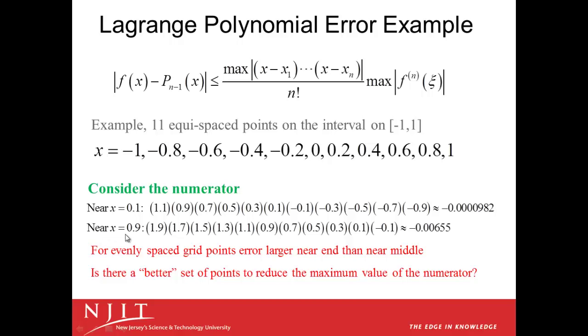If instead we consider an x value near the end of the interval, instead of near the middle of the interval, like 0.1 is right near the middle of the interval, if we choose 0.9 instead, we have 0.9 minus negative 1, 0.9 minus negative 0.8, and so forth. And we have the product on the bottom over here, which works out to be 0.00655. And we see that near the end, this is roughly 100 times as big as the numerator of the error term near the middle of the interval.